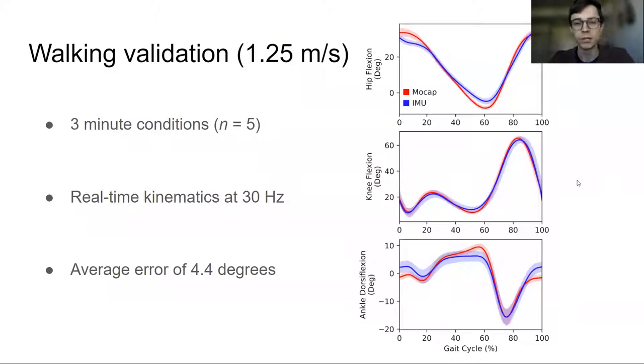For our validation, we had five subjects walk on a treadmill for three minutes, and then we looked at the average kinematics. Here on the right you can see some sagittal plane joint kinematics. These were computed at 30 hertz for the IMUs, which is computed in real time, and the average error was about 4.4 degrees, so fairly low. You can see here that visually it correlates quite well and has a very high Pearson correlation coefficient.